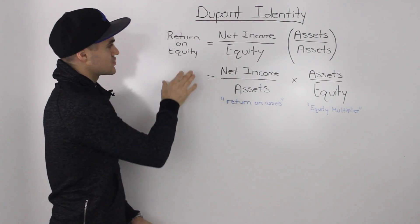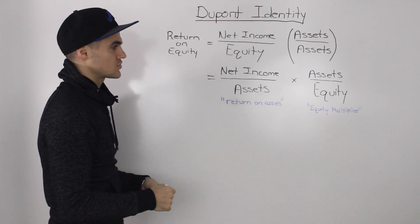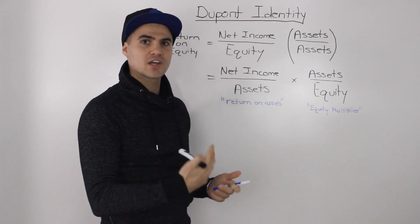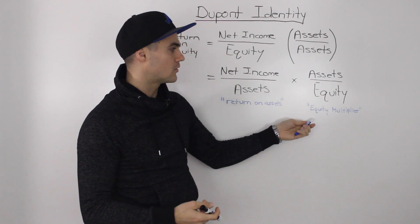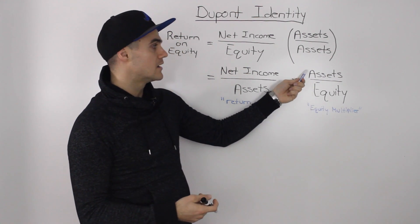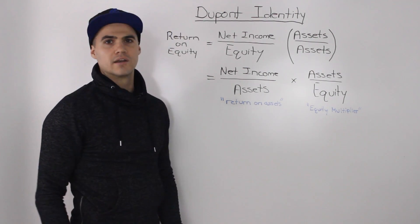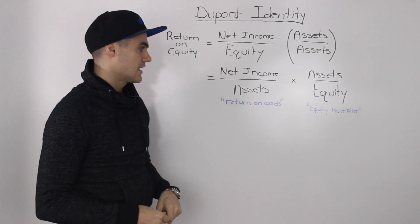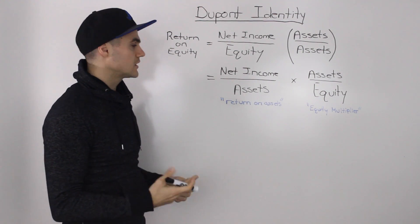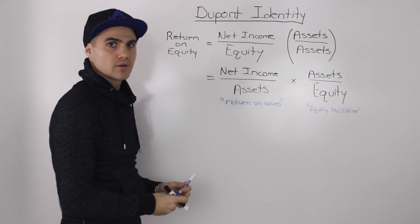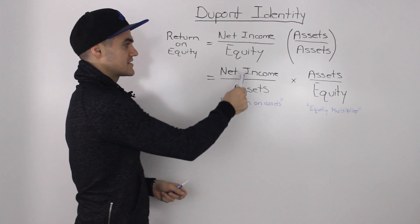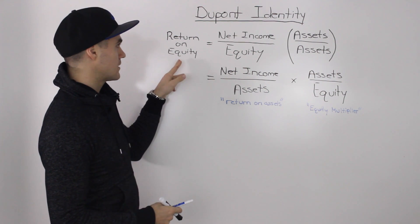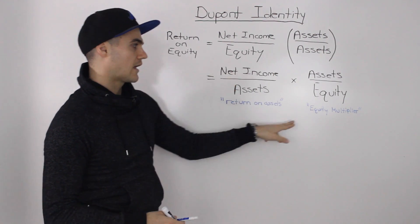As mentioned at the beginning of the video, you want to know whether return on equity is coming from organic or artificial sources. The assets over equity — the equity multiplier — is more of an artificial source because it tells us how much debt we're taking on. If we take on more debt, the equity multiplier goes up because equity stays the same but assets increase. In contrast, return on assets is a more organic source, because simply increasing debt won't necessarily drive up that ratio — if debt increases, net income might go up, but assets definitely go up too, so it won't be as strongly reflected. You want to maximize your return on equity from the return on assets component, not the equity multiplier.